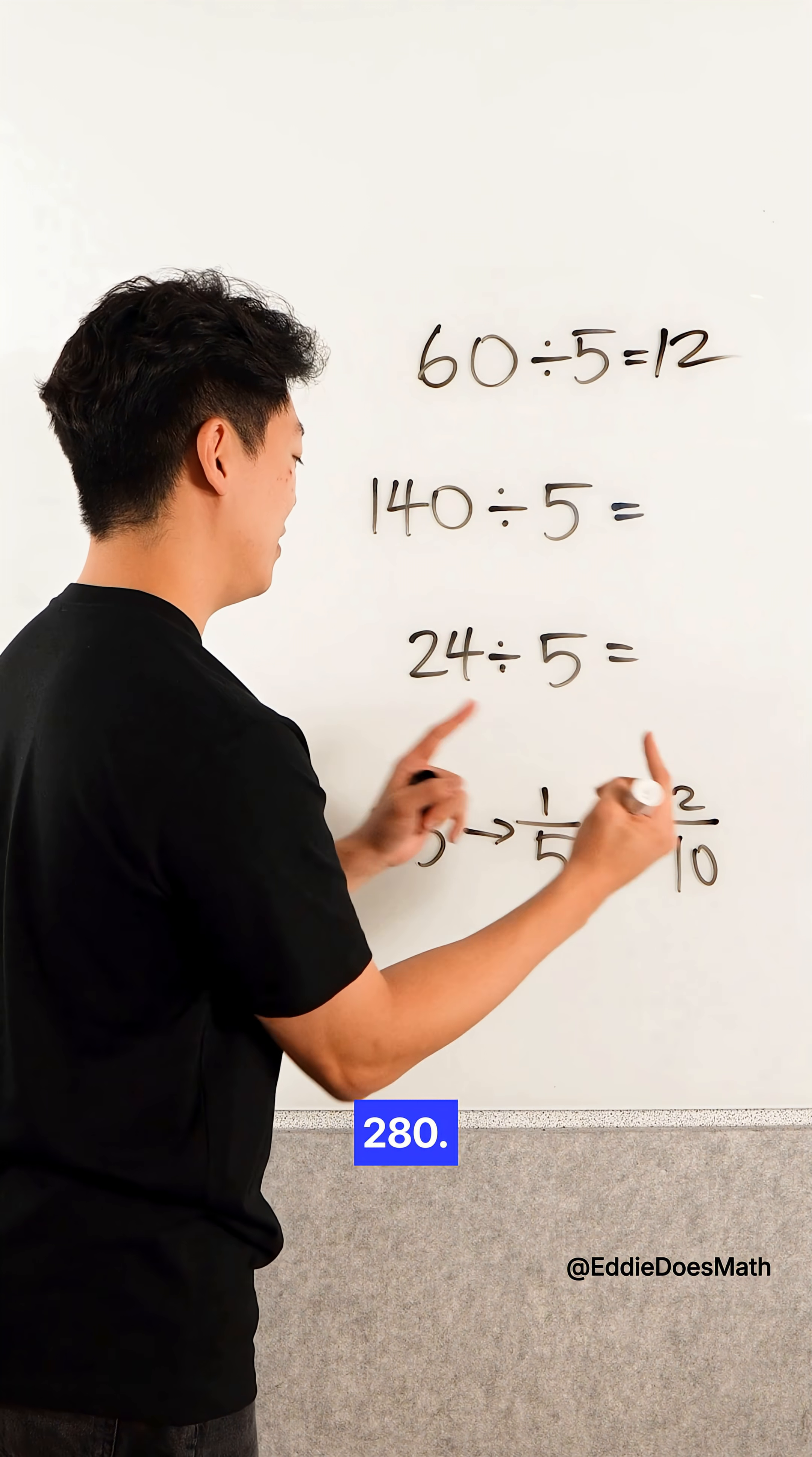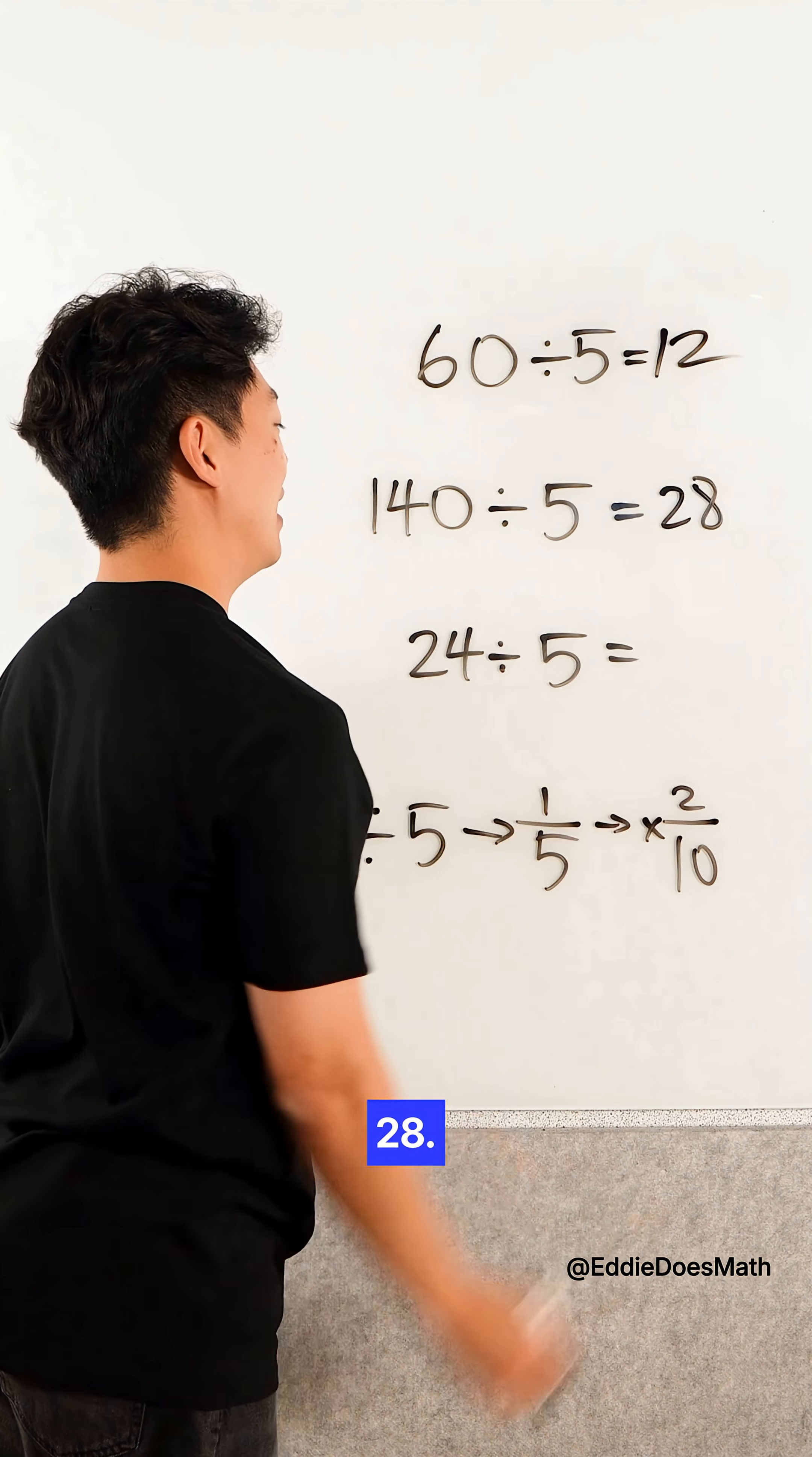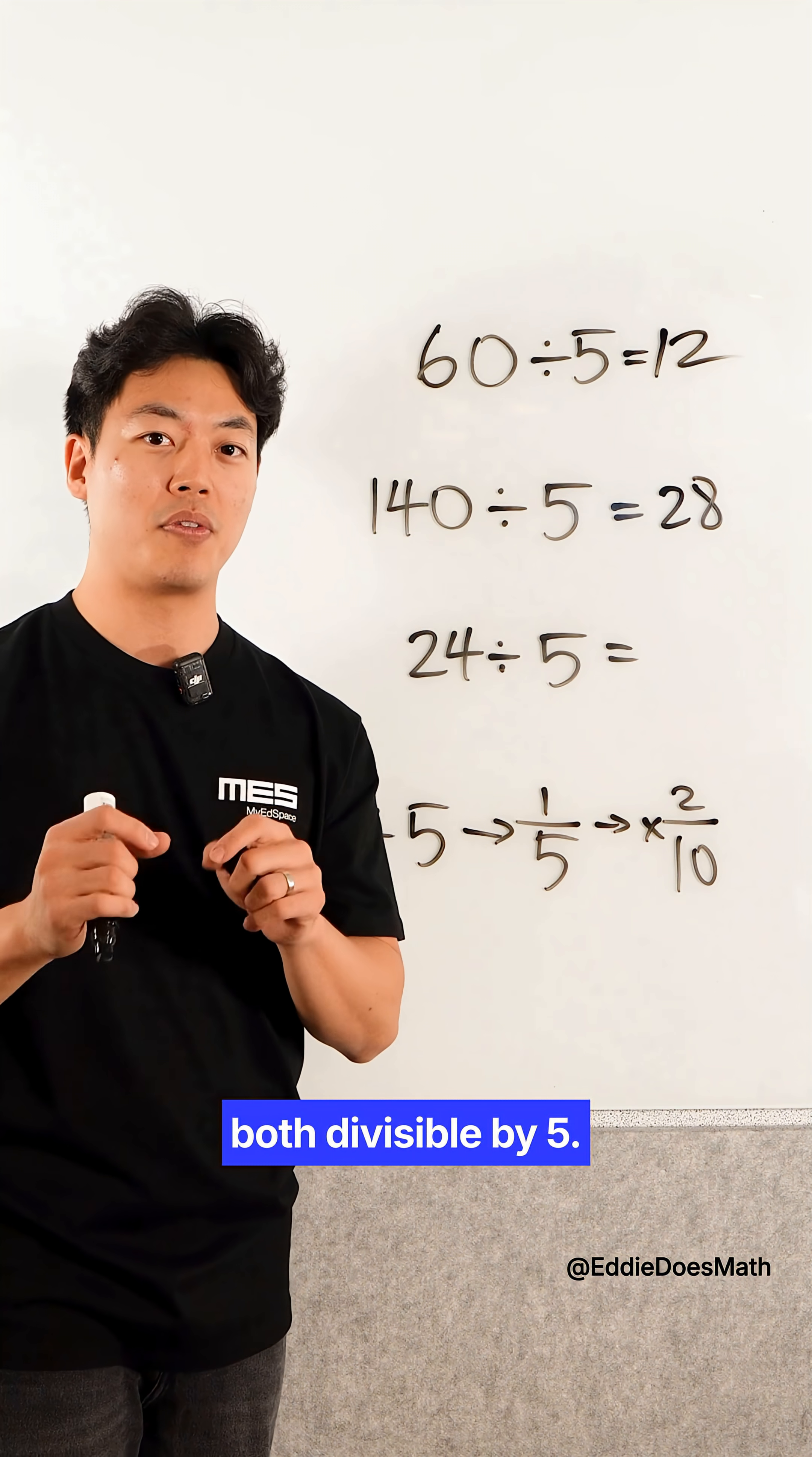So 60 times 2 is 120 divided by 10 is 12. Do the same thing with 140: double it, 280, divide by 10, 28. Now this may seem easy because 60 and 140 are both divisible by 5.